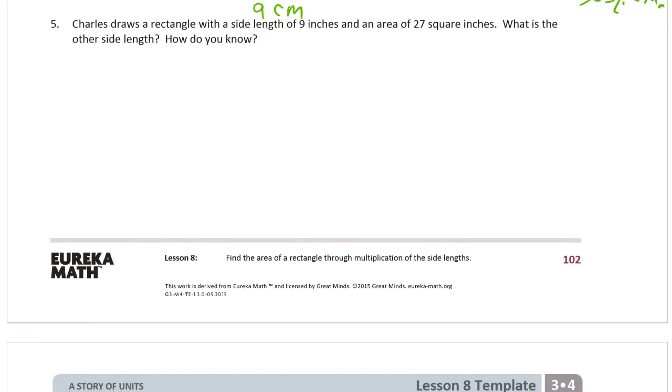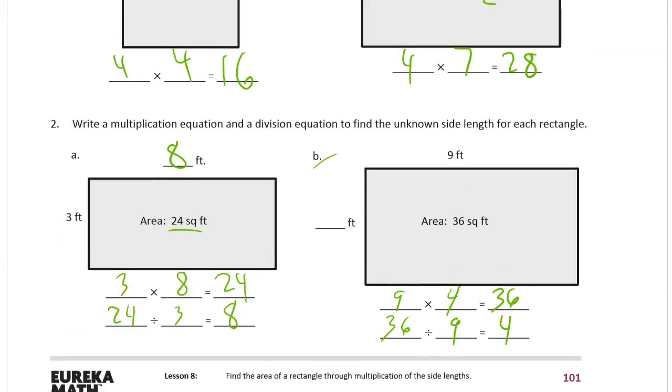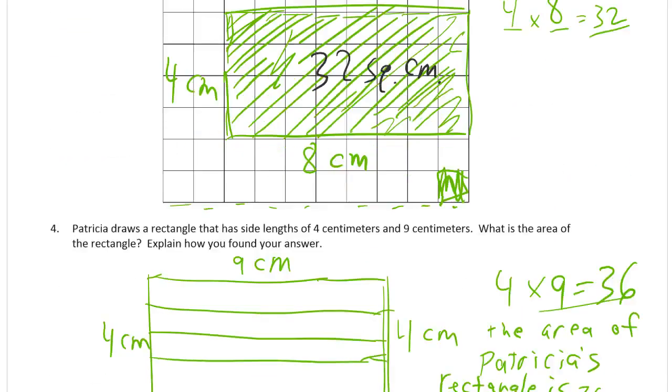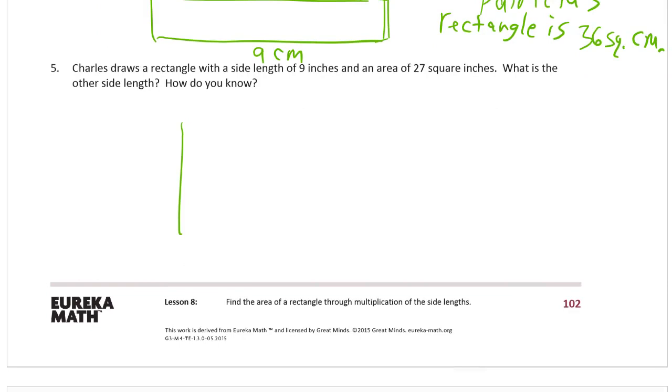Charles draws a rectangle with a side length of 9 inches and an area of 27 square inches. What is the other side length and how do you know? So here's a rectangle. Just like on the ones on the first page where we had an area and we knew a side but we didn't know the other side, we're going to draw the same kind of thing. We know this side length is 9 inches.